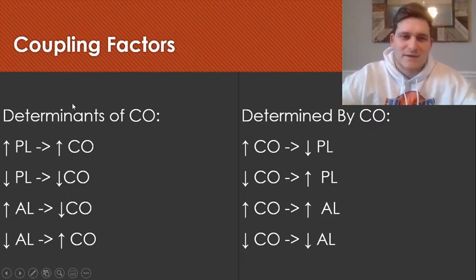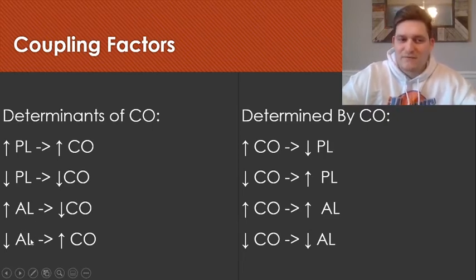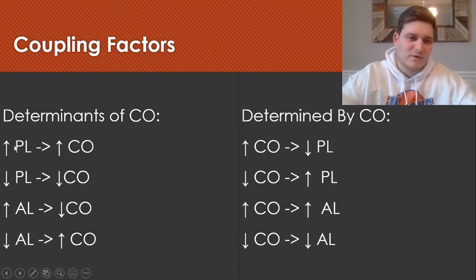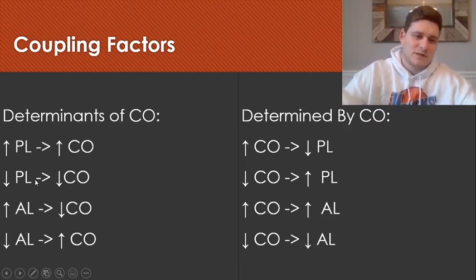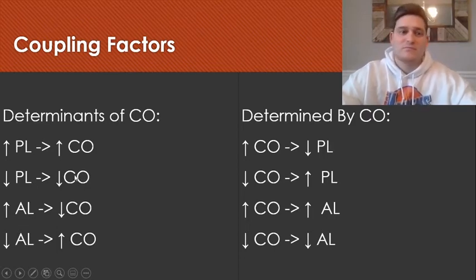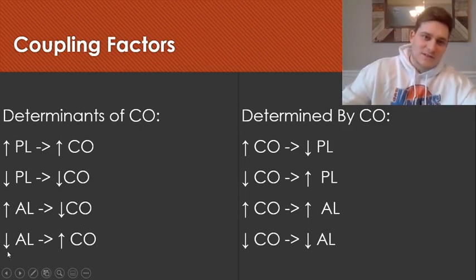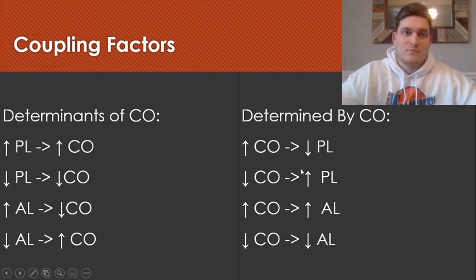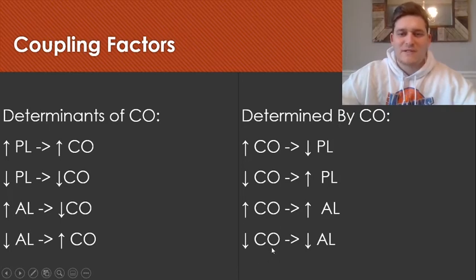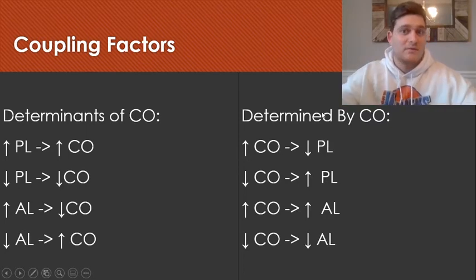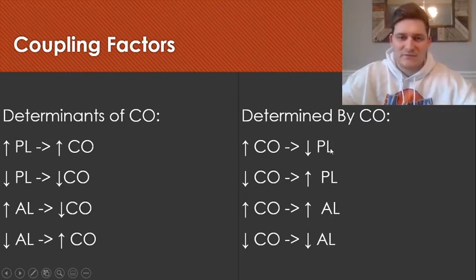To summarize: when preload and afterload are determinants of cardiac output, they are independent variables and cardiac output is the dependent variable. Increases in preload lead to increases in cardiac output; decreases in preload lead to decreases in cardiac output. Increases in afterload lead to decreases in cardiac output; decreases in afterload lead to increases in cardiac output. When preload and afterload are determined by cardiac output, cardiac output is the independent variable and preload and afterload become the dependent variables.